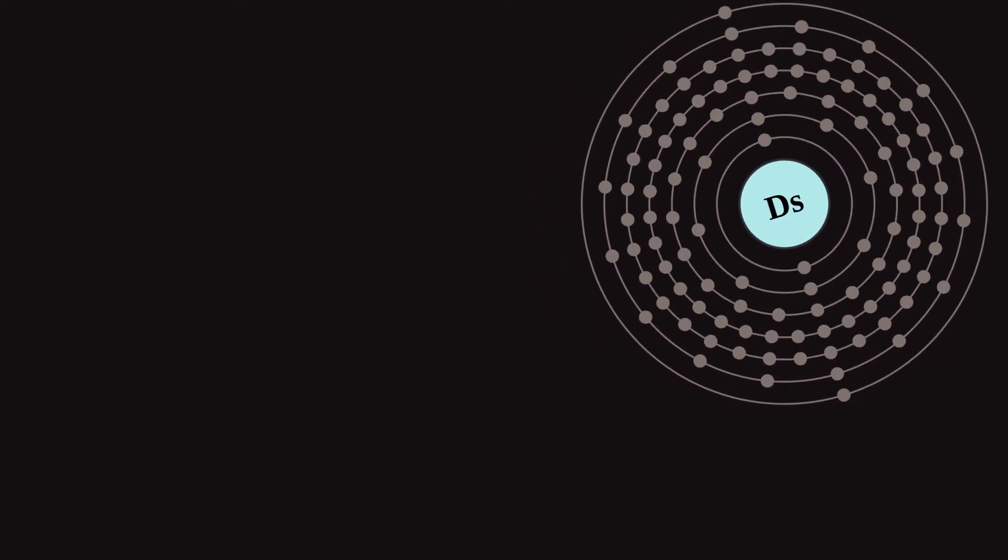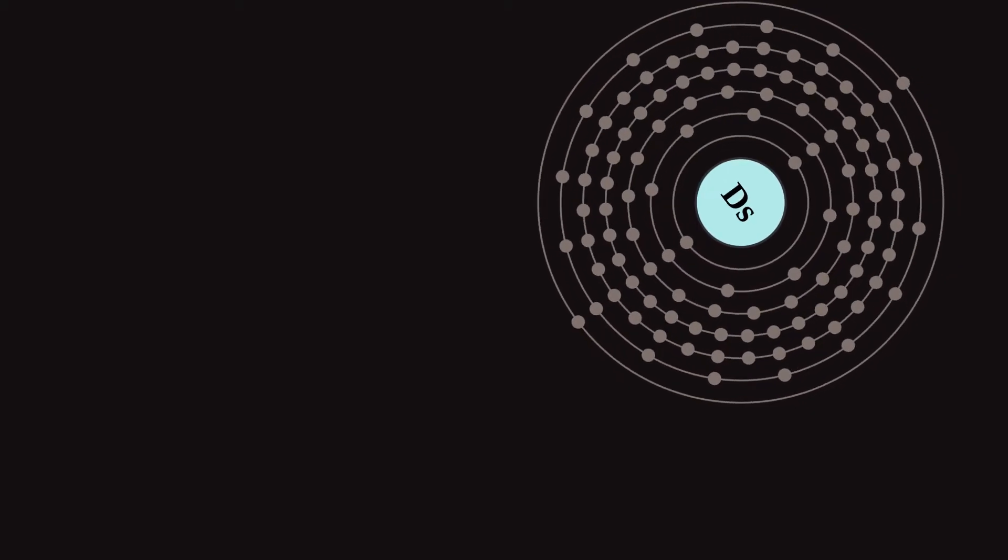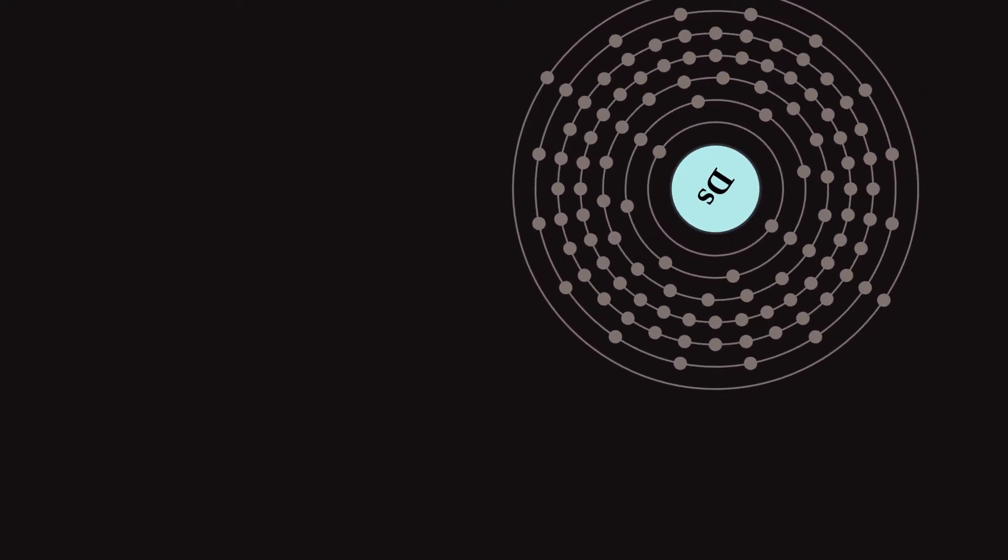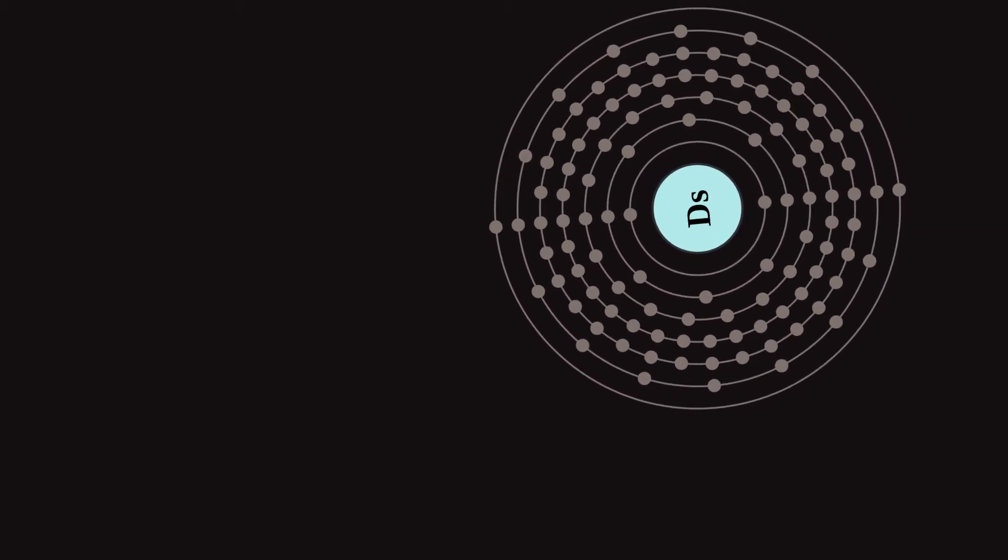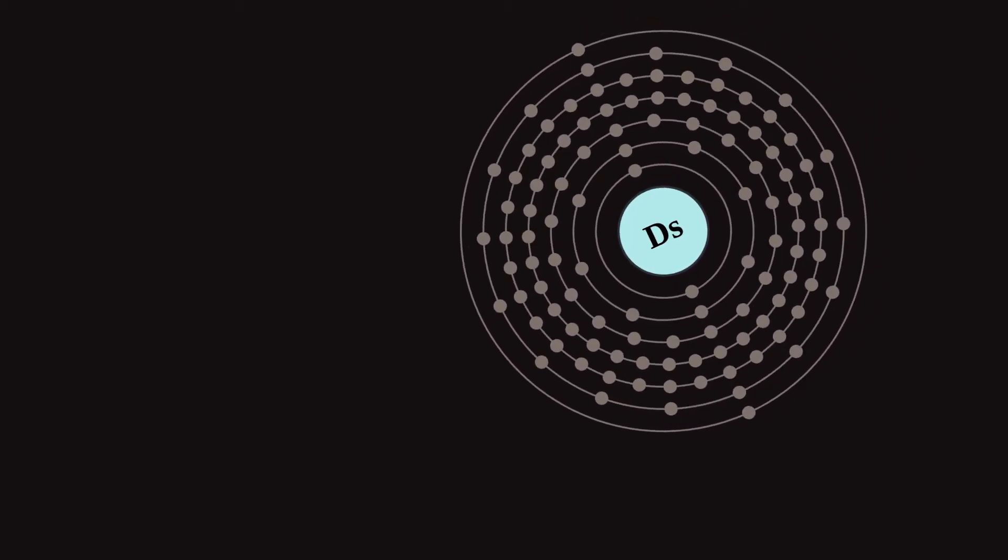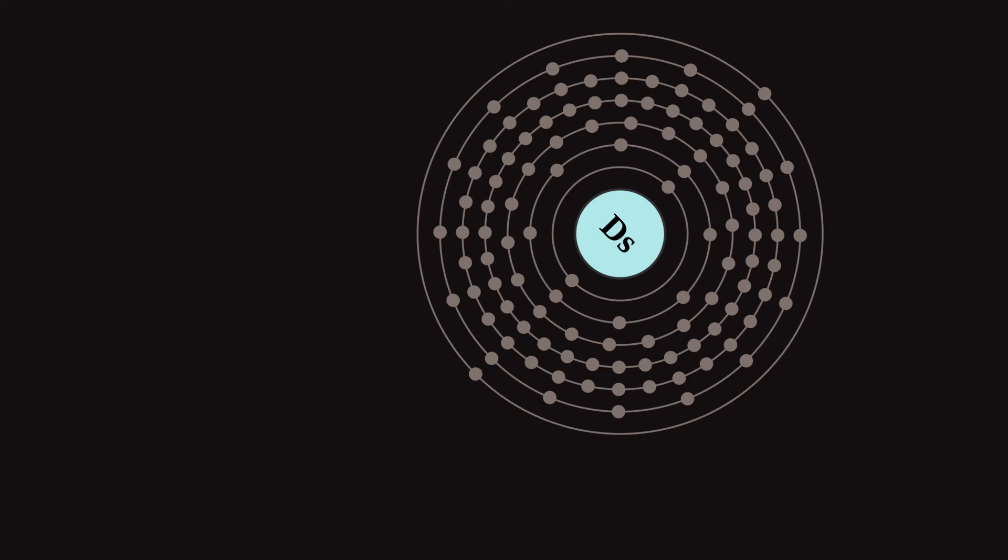It is a member of the 7th period and is placed in the group 10 elements, although no chemical experiments have yet been carried out to confirm that it behaves as the heavier homologue to platinum in group 10 as the 8th member of the 6d series of transition metals.